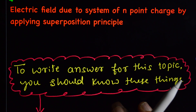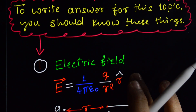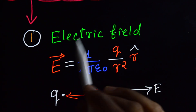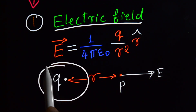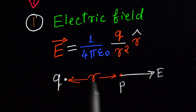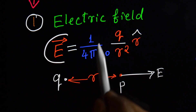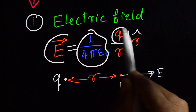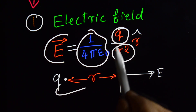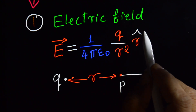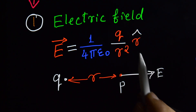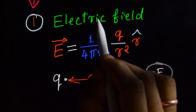To answer this topic we should know these things. The electric field is the space surrounding a charge in which another charge experiences a force. The expression is E = (1/4πε₀)(q/r²)r̂, where r is the distance between charge q and point P where we want to find the electric field, and r̂ is the unit vector in the direction of the electric field.